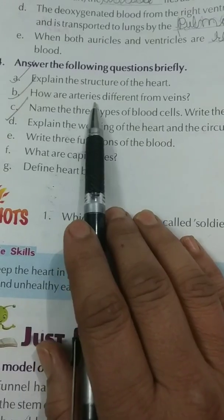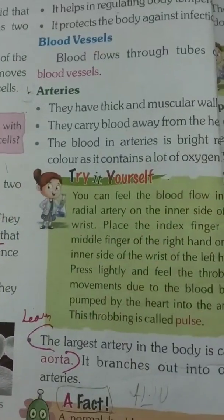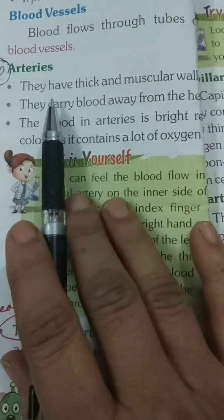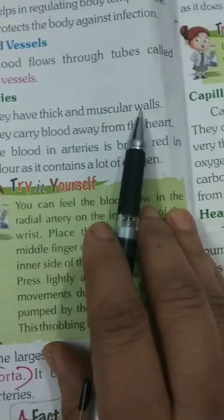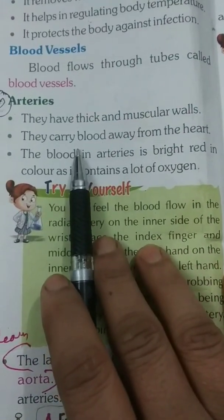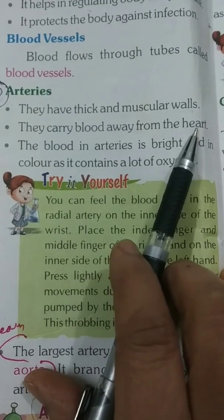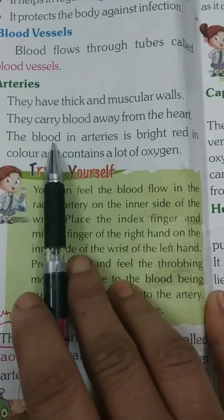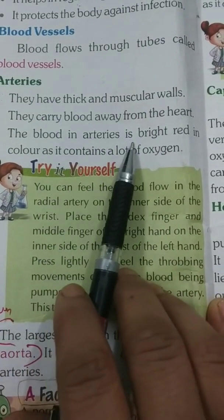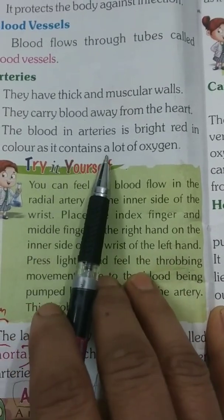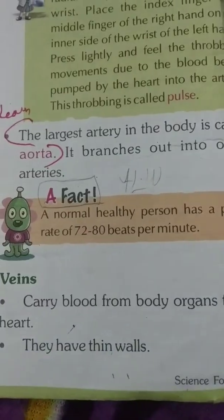How are arteries different from veins? Arteries have thick and muscular walls. They carry blood away from the heart. The blood in arteries is bright red in color as it contains a lot of oxygen.